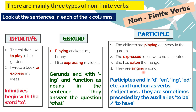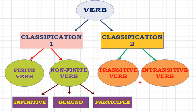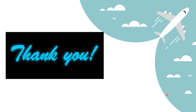To learn more about gerund and participle, there is a separate video for gerund and participle - do go through that for more clarity. In conclusion: classification one is finite and non-finite; under non-finite, there are infinitive, gerund, and participle. Classification two is transitive verb and intransitive verb. Thank you very much for paying attention to this presentation.